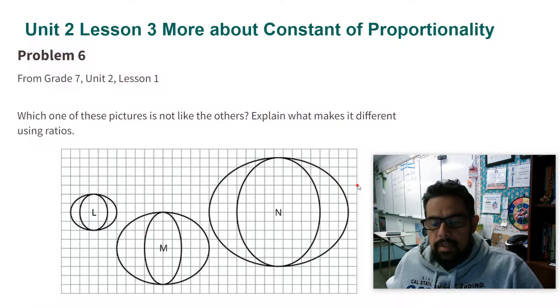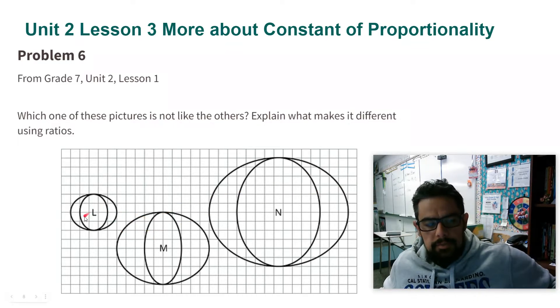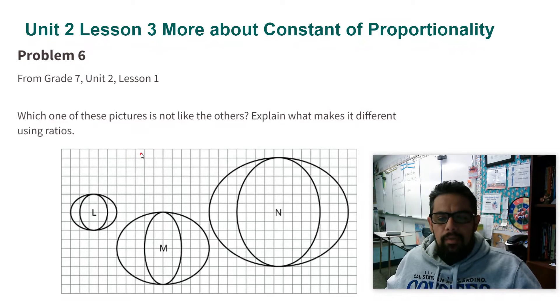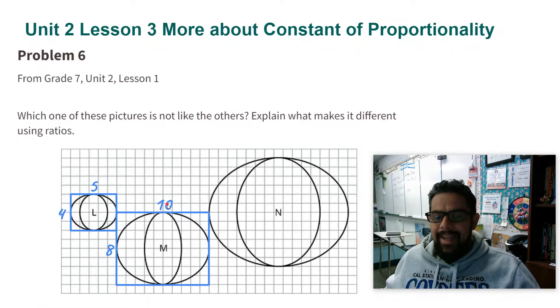We have three different figures and then another figure inside of them. They're all ovals. So we're going to start with the outside oval and then make the ratios there first. So the first one for L is 4 to 5. For M it's 8 to 10.